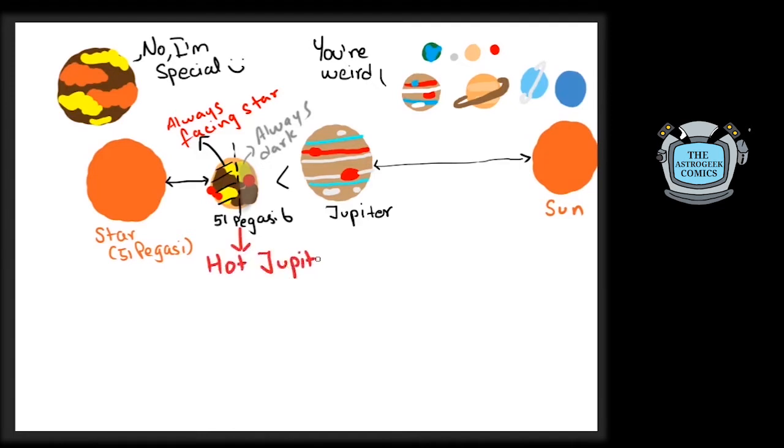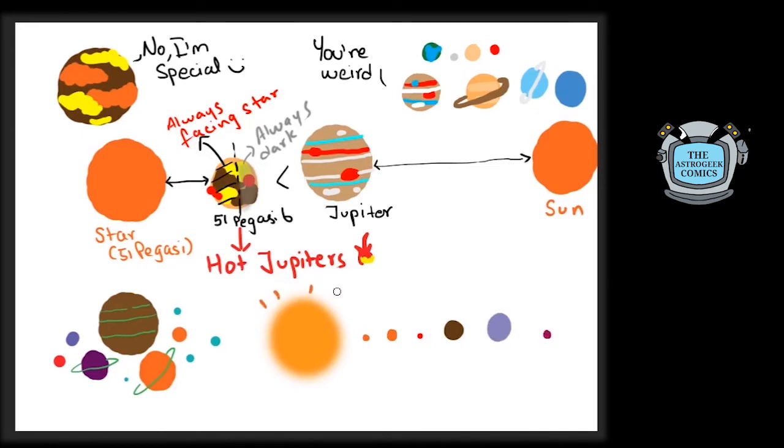This class of planets were called hot Jupiters in regard to their distance and mass. With improved and more sensitive methods and technology to hunt for exoplanets, we started discovering planets of all sizes and in all range of distances from their stars.